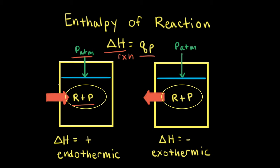When heat flows from the surroundings to the system, the system or the reaction absorbs heat, and therefore the change in enthalpy is positive for the reaction. This is called an endothermic reaction.